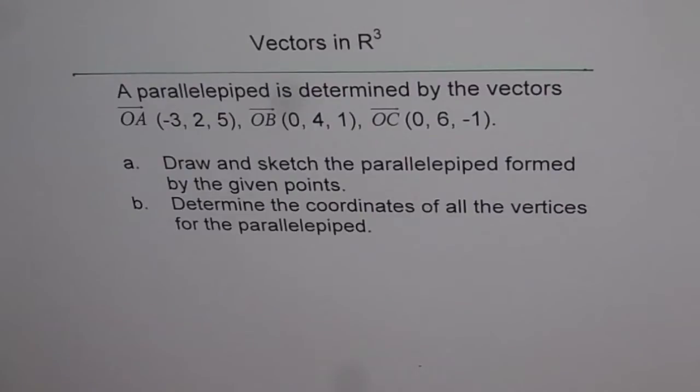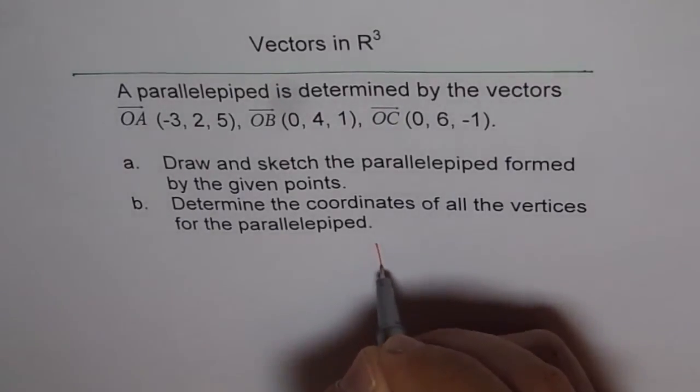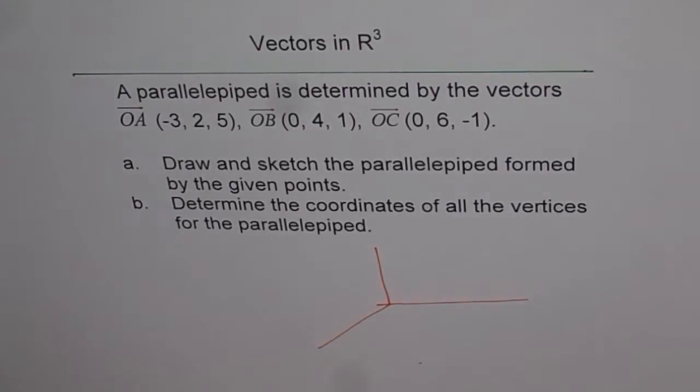Let's try to understand how to draw a parallelepiped. We have seen already how to draw a rectangular prism with given position vectors. Now, in a parallelepiped, all the faces are parallelograms. Remember that. So we will sketch the three vectors and try to form a parallelepiped, remembering that all faces should be parallelograms. That's the strategy. Let me make the axis here first. This is our axis in R³, and then we will plot the vectors.